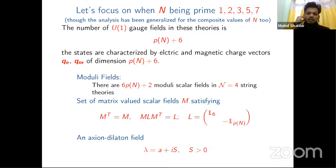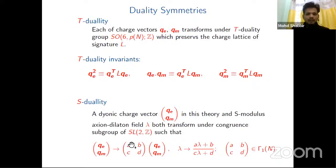The states are characterized by electric and magnetic charge vectors q_e and q_m of dimension 6N + 6. We have here in the moduli space fields: there are 6N + 2 of them, scalar fields for heterotic string theories and a set of metric, antisymmetric tensor scalar fields satisfying these relations where L is the signature matrix of this size. There's also an axion-dilaton field λ.